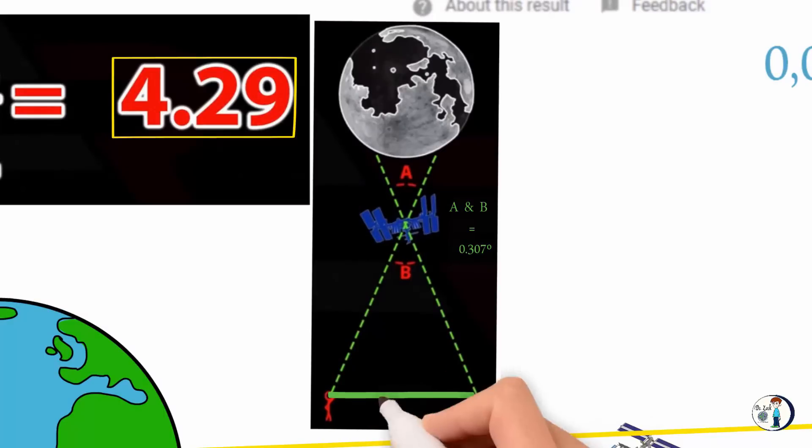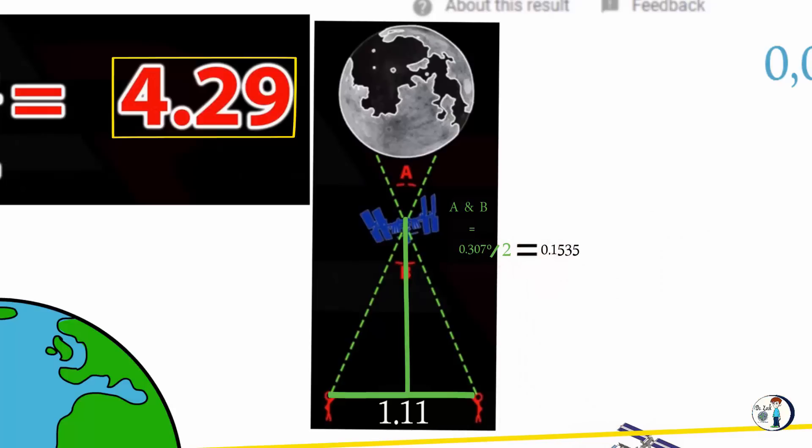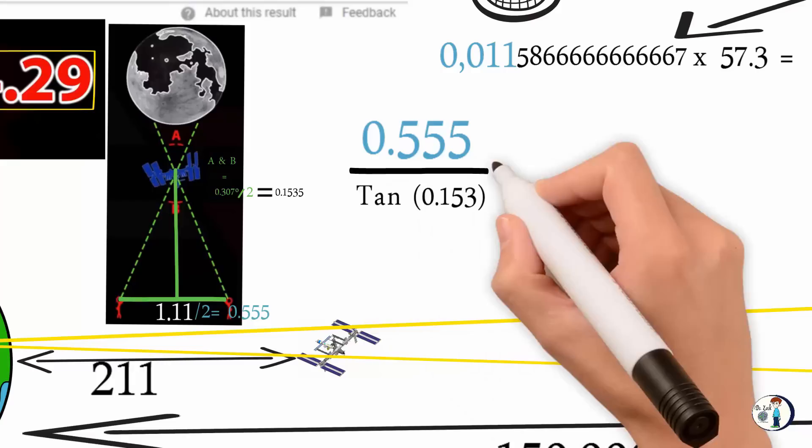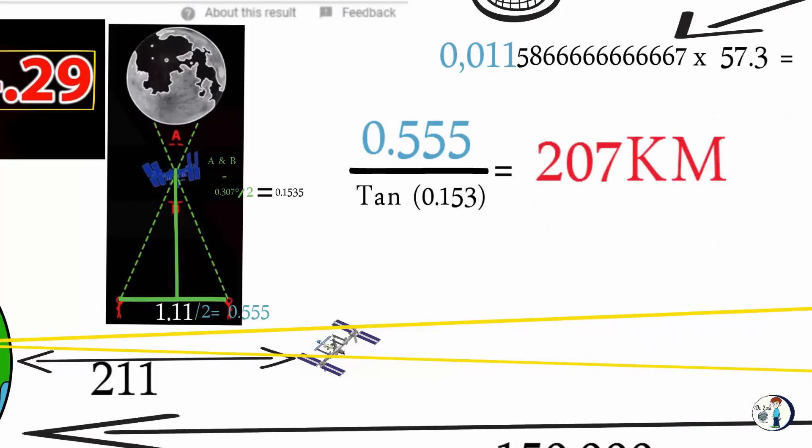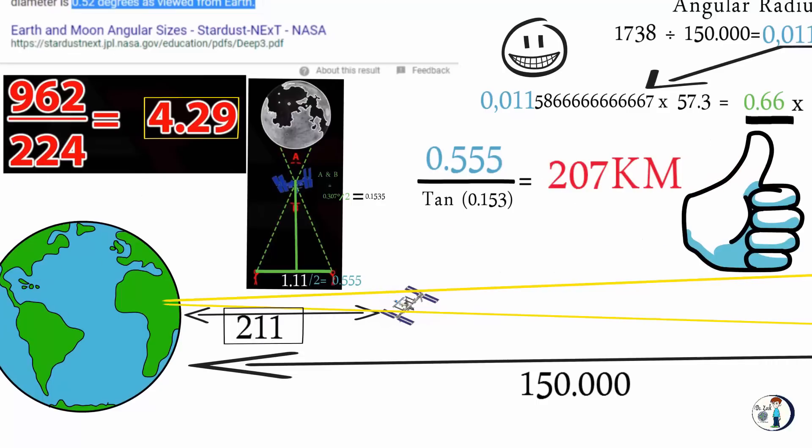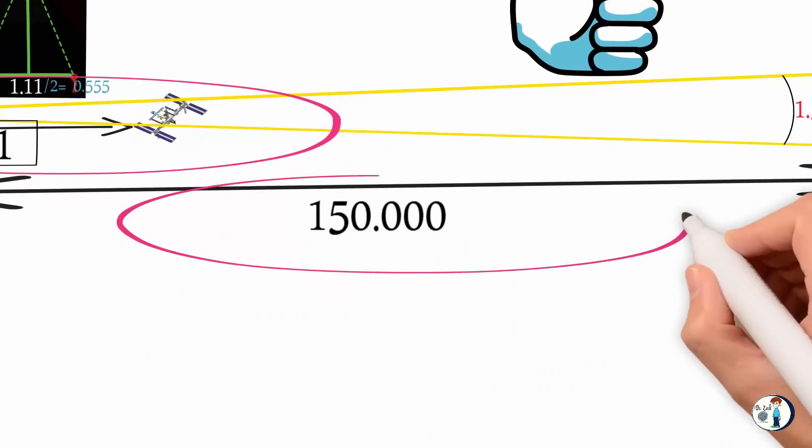Now we cut the triangle in half like he did, and we get angle 0.153, and the distance becomes 0.555 kilometers instead of 1.11 kilometers. Very simple math. So 0.555 kilometers divided by tangent of 0.153 degrees equals 207 kilometers. Very close, huh? If we use all the decimals, we get exactly 211 kilometers, like the distance I gave you at first. That is even more accurate than his math. Therefore, the ISS is more than real, and the moon is 150,000 kilometers this time.